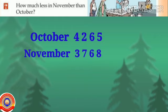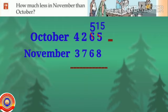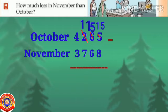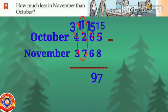4265 minus 3768: subtraction of 8 from 5 is not possible, so borrow 1 from 6 — 5 becomes 15 and 6 becomes 5. We can't subtract 6 from 5, so borrow 1 from 2 — 5 becomes 15 and 2 becomes 1. We can't subtract 7 from 1, so borrow 1 from 4 — 1 becomes 11 and 4 becomes 3. Then: 15 minus 8 is 7, 15 minus 6 is 9, 11 minus 7 is 4.